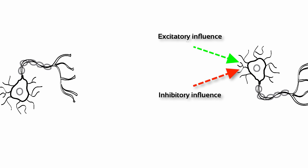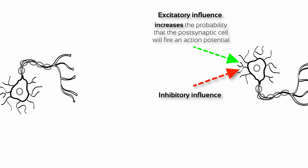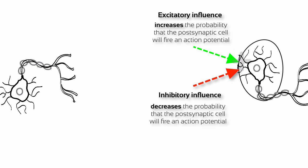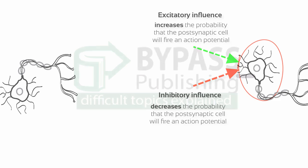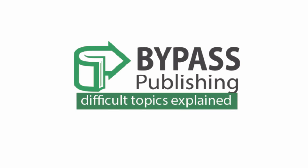Excitatory effects are those that increase the probability that the postsynaptic cell will fire an action potential. Inhibitory effects are those that decrease the probability. Note that when the current through the receptor is positive, the resulting change is excitatory. When the current is negative, the resulting change is inhibitory.